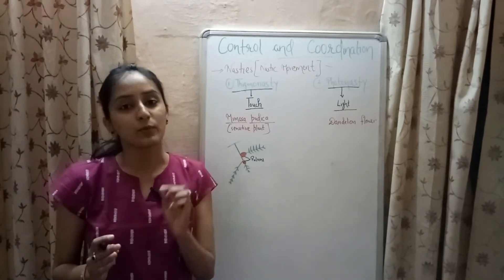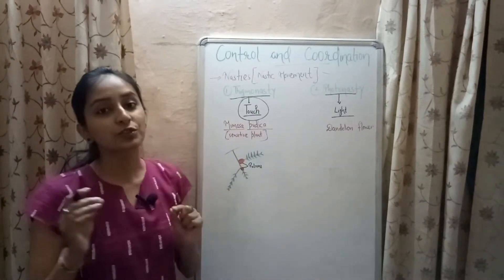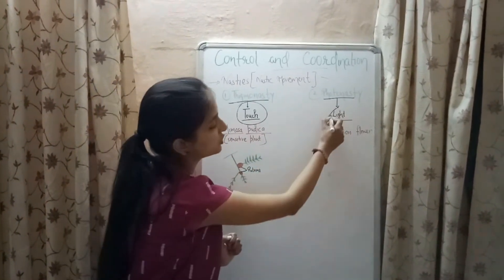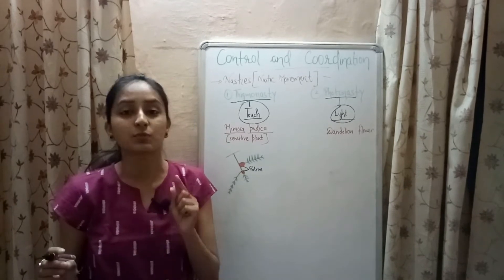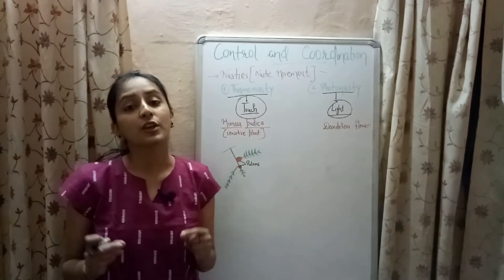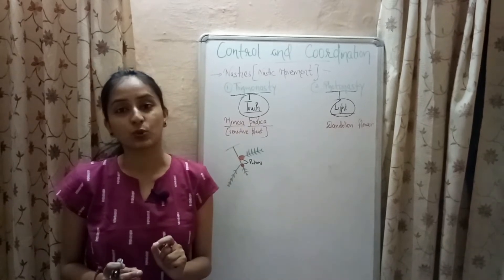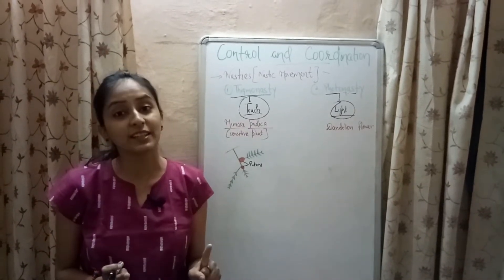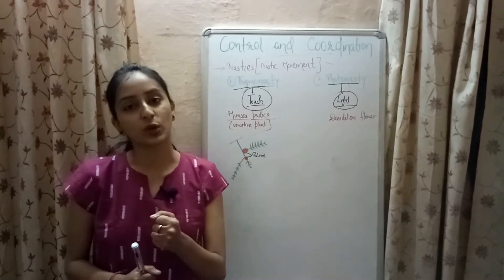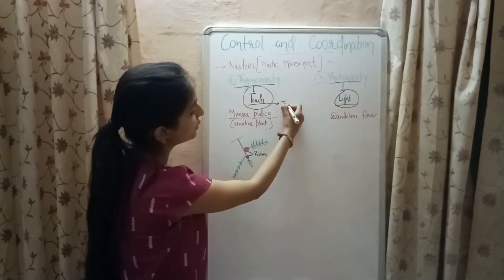Thigmonasty is the nastic movement produced in response to touch. A well-known example is the sensitive plant Mimosa pudica, commonly called the touch-me-not plant. When you touch the leaves of Mimosa pudica, the leaves immediately fold up — this immediate folding is the response to touch.